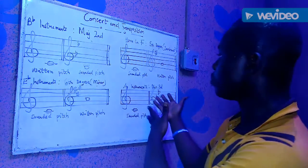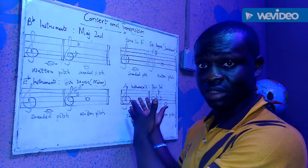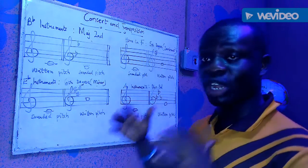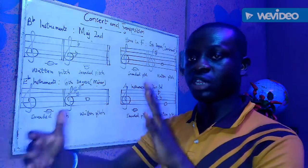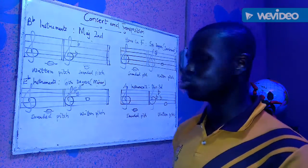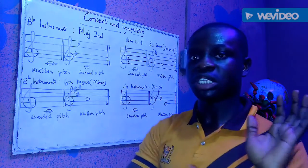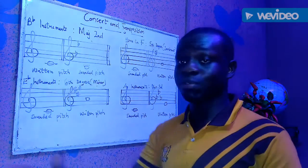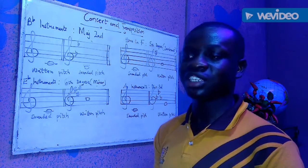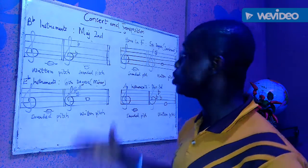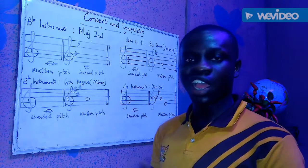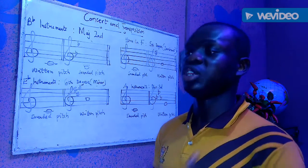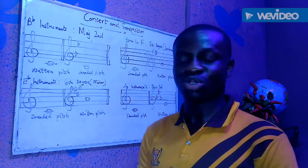To summarize: written notes for A instruments are the minor third from the concert key. Written notes for horn in F are the fifth degree from the concert key. E-flat instruments use the sixth degree from the concert key. B-flat instruments use the major second from the concert key. That is the basic way to explain concert pitch and transposition. I hope you now understand, and this will help you when you go out for any audition.